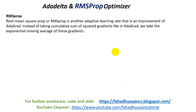Instead of taking the cumulative sum of the square gradient — you will remember that the ST value from our past was the loss function with respect to weight, squared — here, instead of taking the cumulative sum of the square gradient like in AdaGrad, we take the exponential moving average of these gradients. We need the moving average of these gradients.